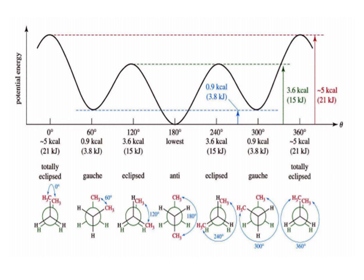Looking at the potential energy diagram of these conformations, we can conclude that energy changes from fully eclipsed to gauche conformation. When the dihedral angle is 180°, the anti conformation is more stable compared to the gauche conformation at 60° and 300°, which is more stable compared to the fully eclipsed conformation at 0° or 360°.